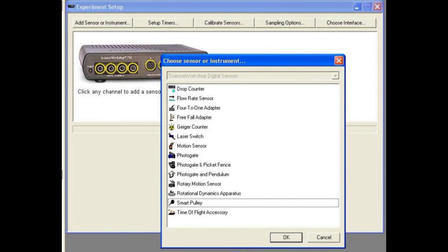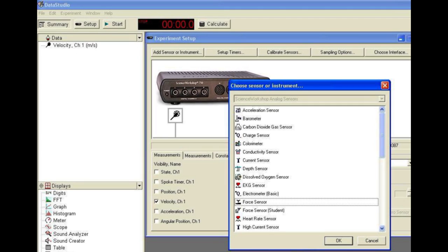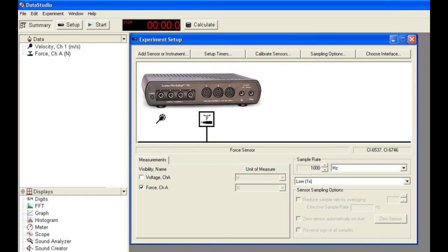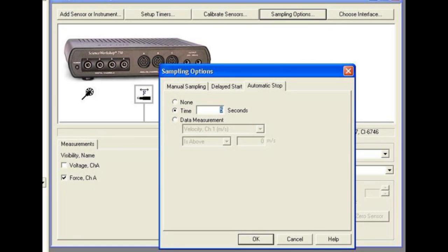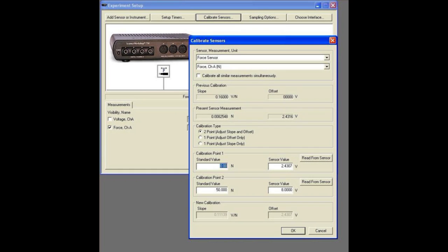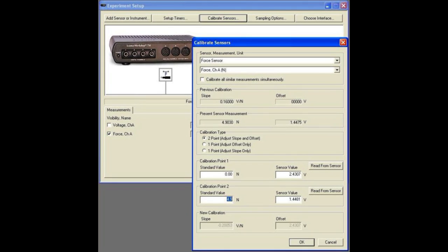Let Data Studio know that a smart pulley has been plugged in, then indicate the presence of a force sensor. Set the sample rate on the force sensor to 1000 hertz and the stop time to a few seconds. Calibrate the force sensor as in last week's lab: put in a standard value of 0.0 newtons and read from the sensor when there's no tension, then input a standard value of 4.9 newtons, hang 500 grams over the pulley, and read the second calibration force.